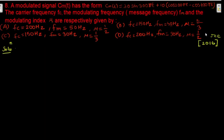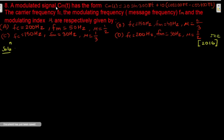Hello friends, today we will solve a JEE equation from the year 2016. A modulated signal has the form 30 sin(300πt) + 10[cos(200πt) − cos(400πt)]. The carrier frequency fc, the modulating frequency fm, and the modulation index mu are to be found.